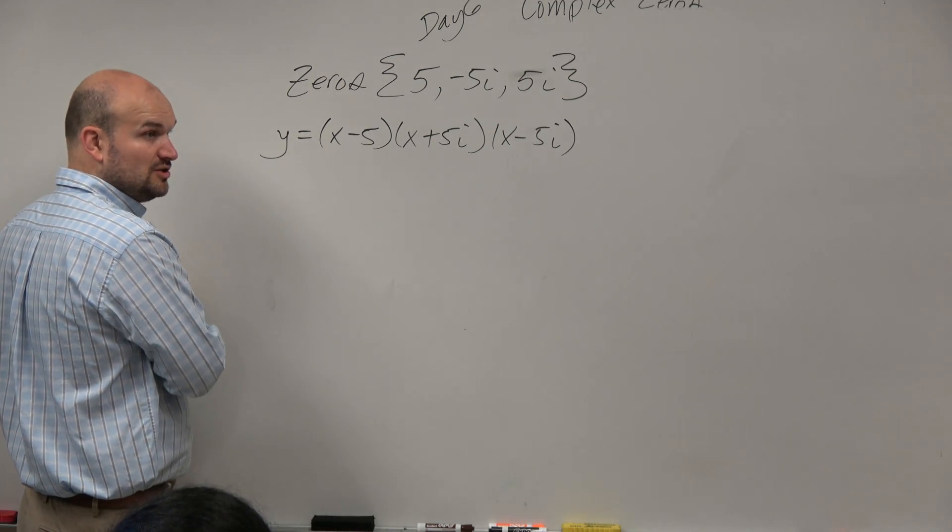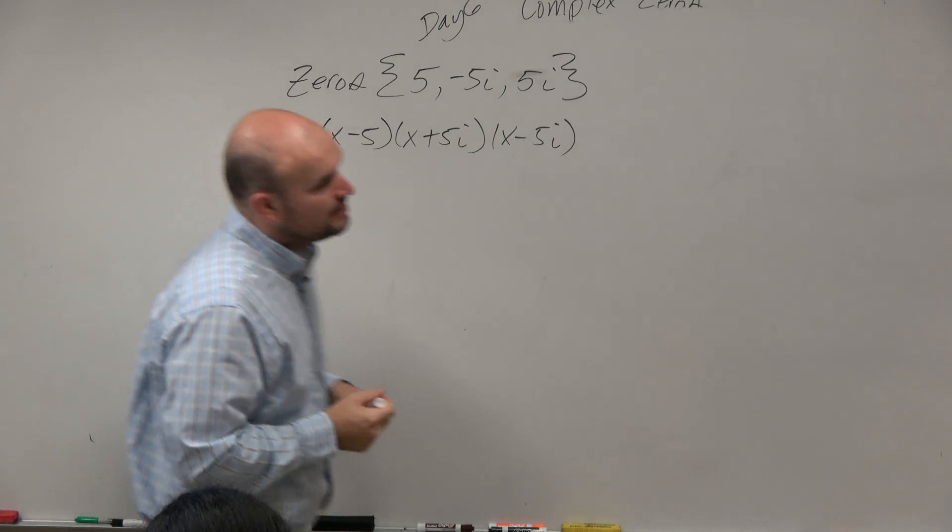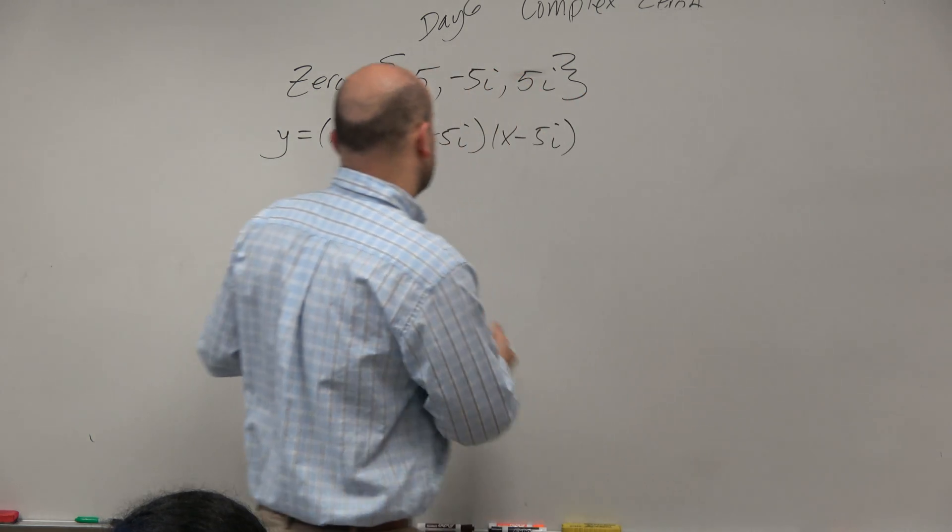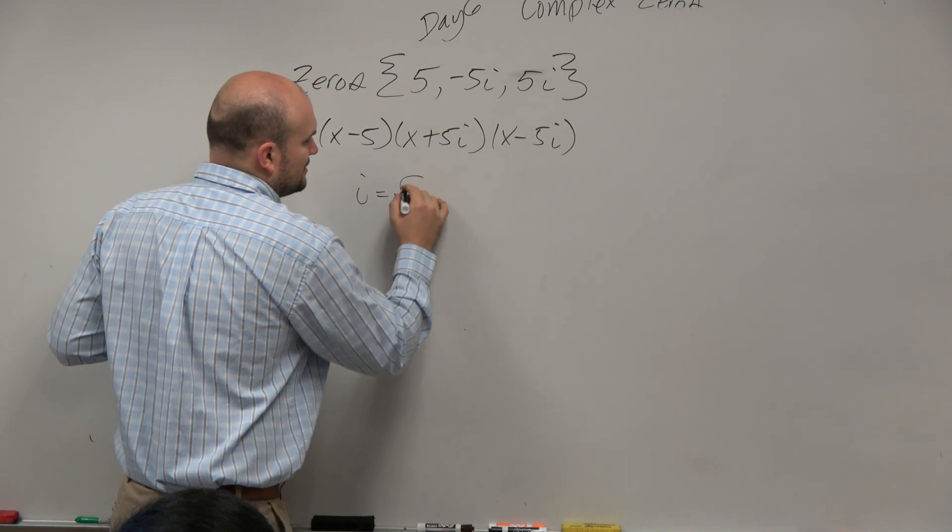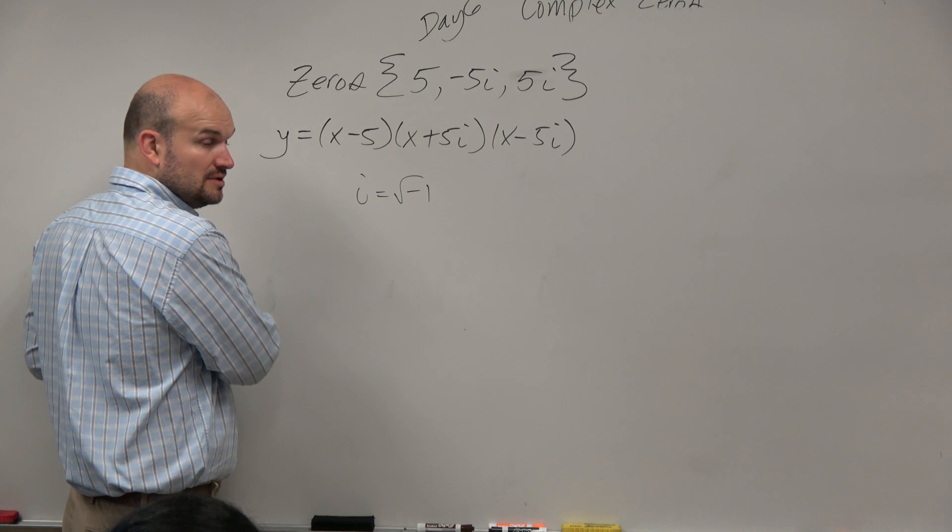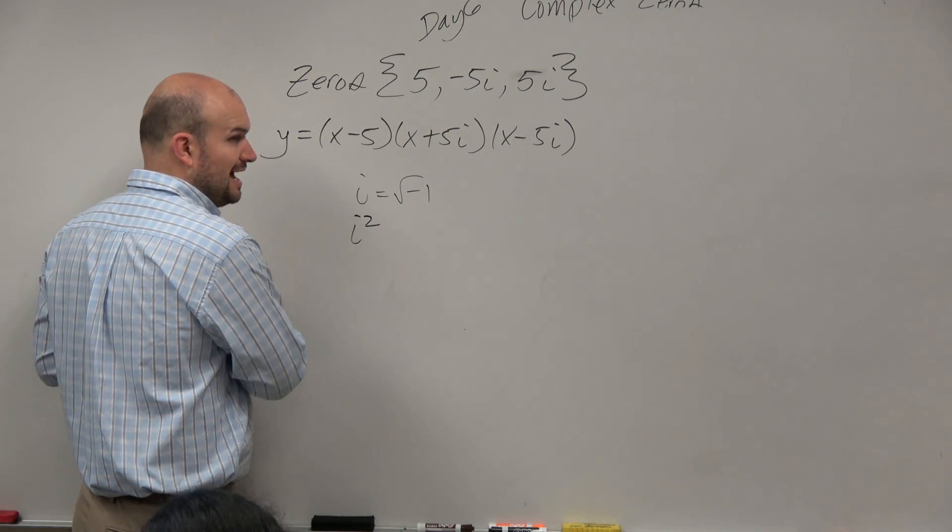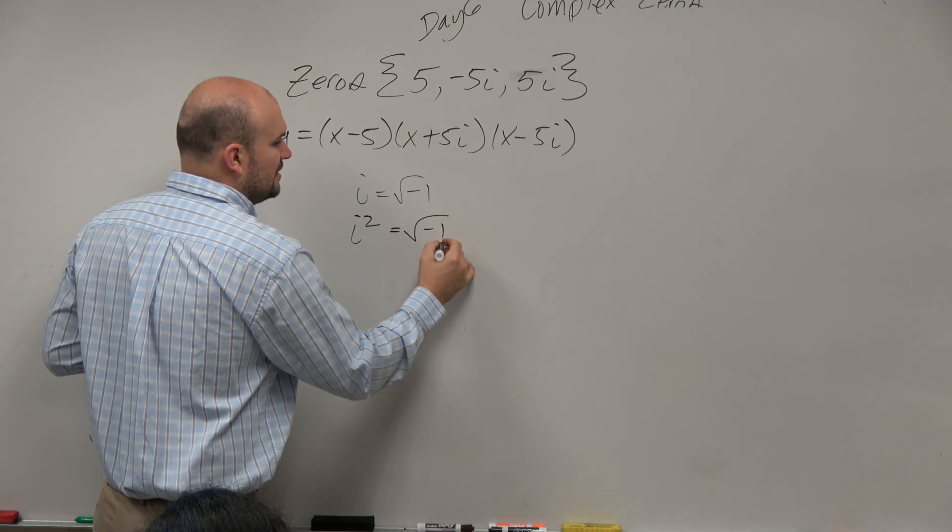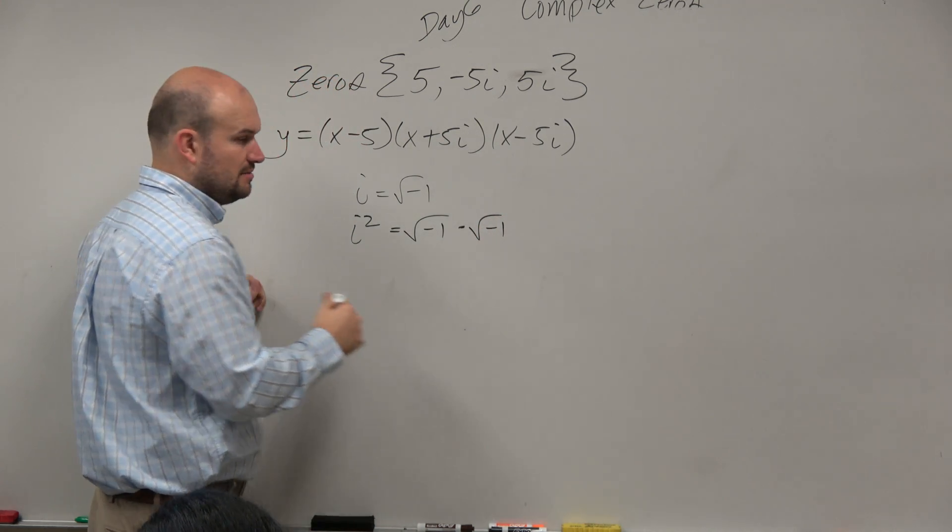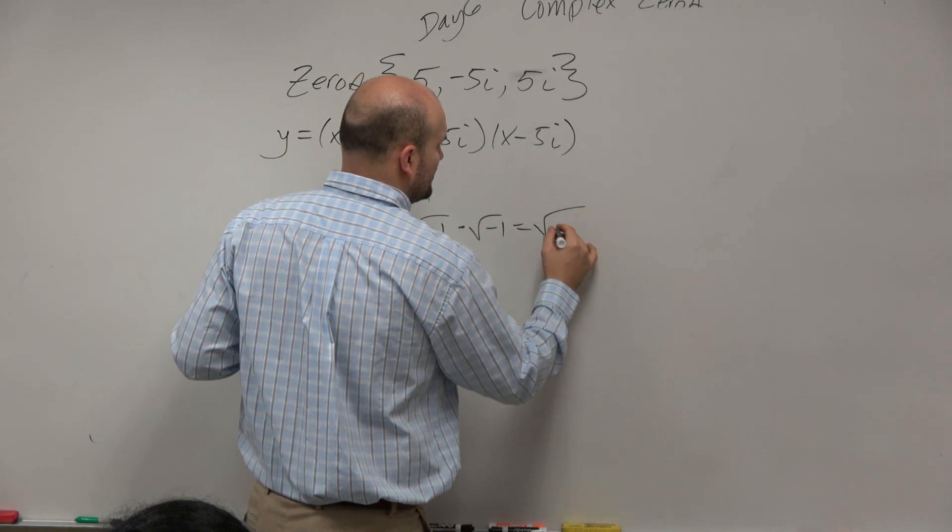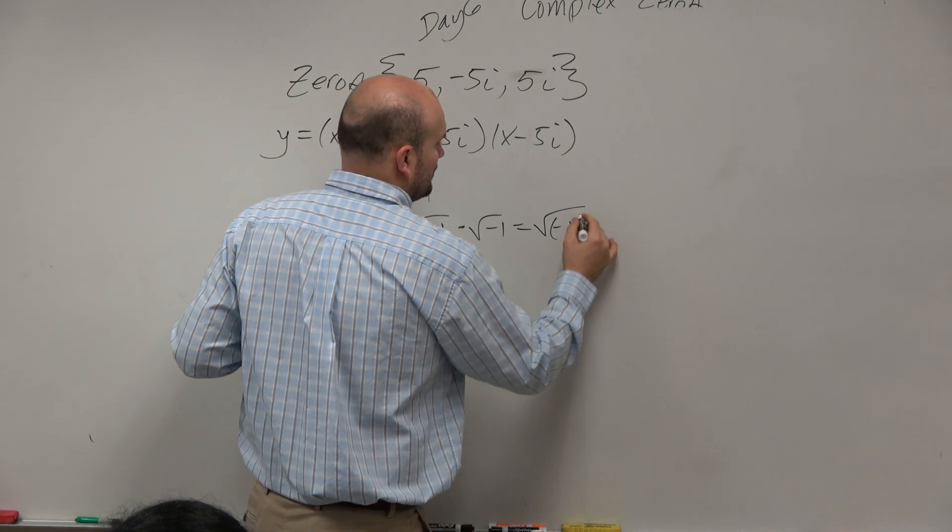So now we need to multiply this out. Oh, I forgot to mention one thing. Remember guys, i is equal to square root of negative 1, squared. I'm not saying any mistruths here. So it's just equal to negative 1. So i squared is really equal to negative 1.